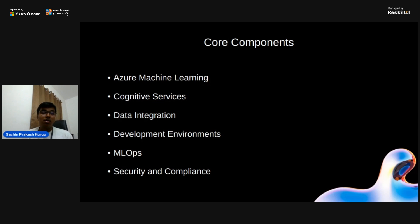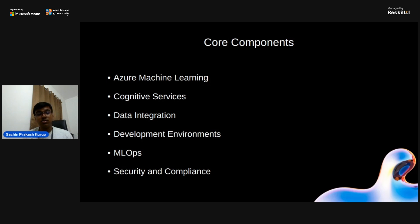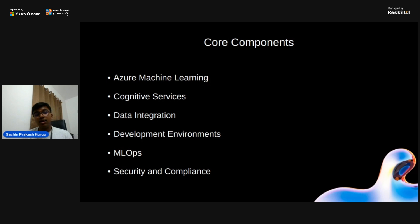Azure AI Studio combines machine learning and DevOps — MLOps — to automate the deployment and monitoring of models. This includes version control to track changes in models and data, CI/CD pipelines to automate the deployment process, and monitoring rules to continuously check performance and ensure reliability. Azure AI Studio also prioritizes data encryption both at rest and in transit, manages user access and permissions, and adheres to industry standard regulations like GDPR, HIPAA and ISO.